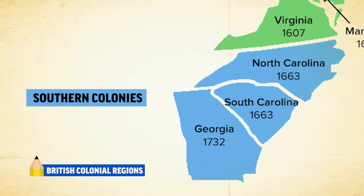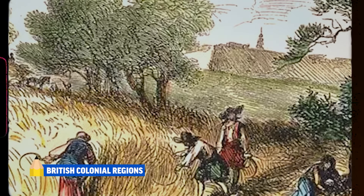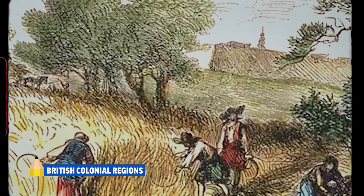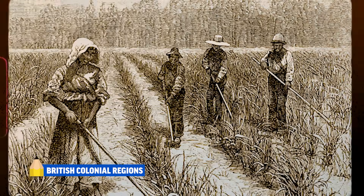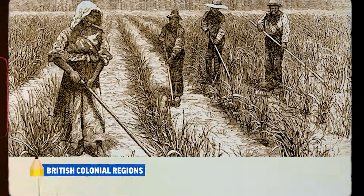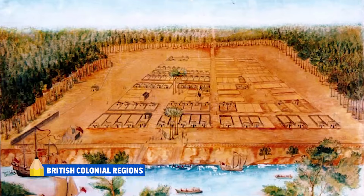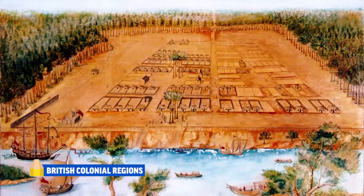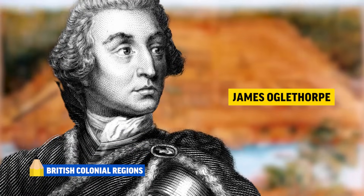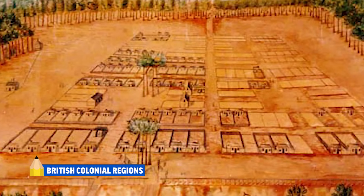Finally, the southern colonies included North Carolina, South Carolina, and Georgia. North Carolina was characterized by small, independent farms, but South Carolina had lucrative rice and indigo plantations, a reliance on slave labor, and a large port city in Charleston. The last colony to be founded was Georgia, by James Oglethorpe. The colony served as a buffer colony to protect British colonists from Spanish Florida.